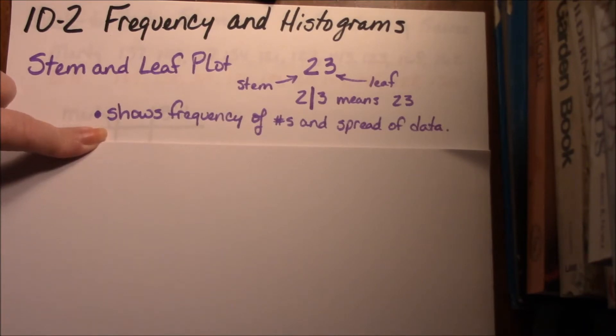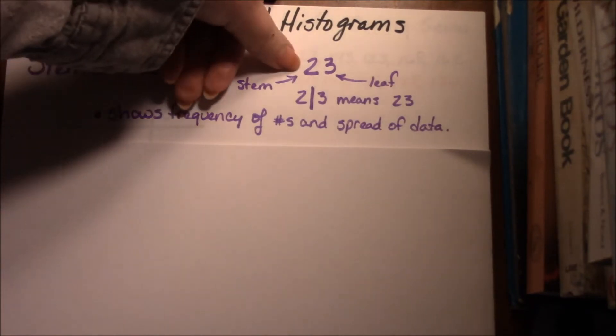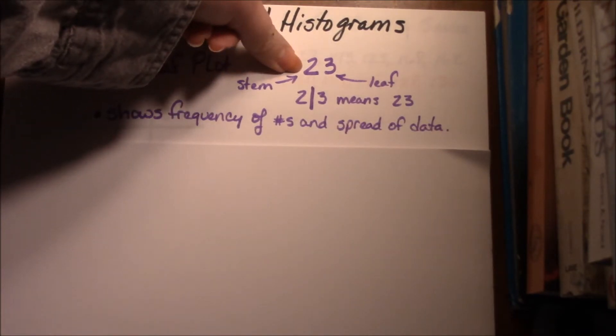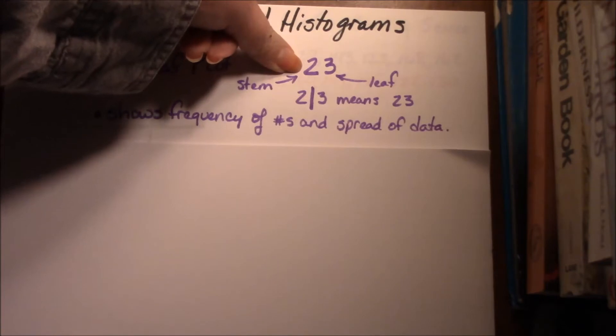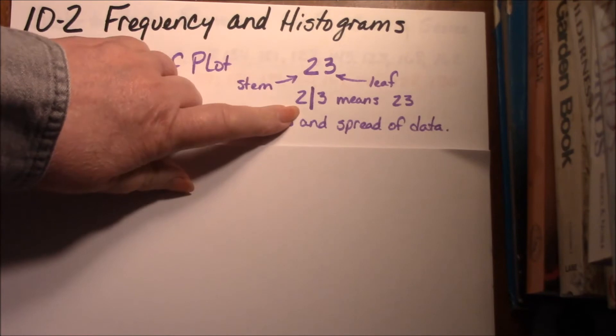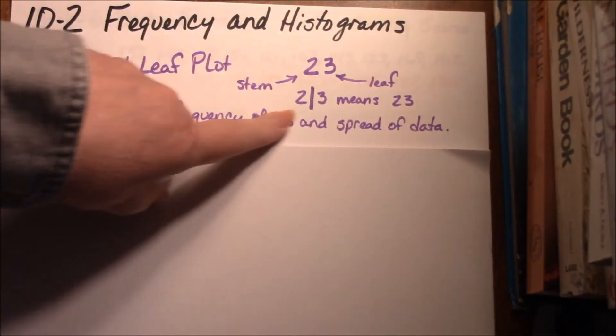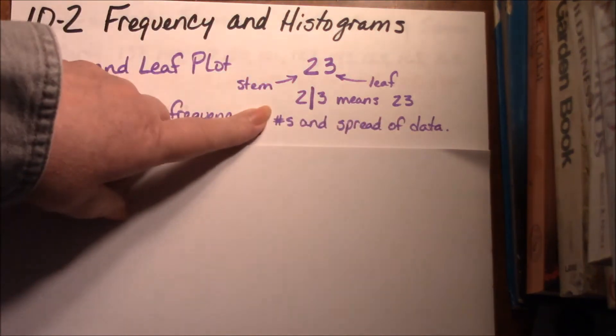A stem and leaf plot is important because it shows the frequency of the numbers and the spread of the data. The tens column, or sometimes the tens and hundreds column, is the stem. The leaf is the ones column, or sometimes the ones and tens, depending on the data you have. When you have a 2 and then a line and a 3, that means 23. This is our key, and every time you draw a stem and leaf plot, you have to draw a key.